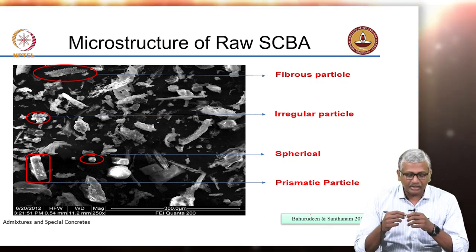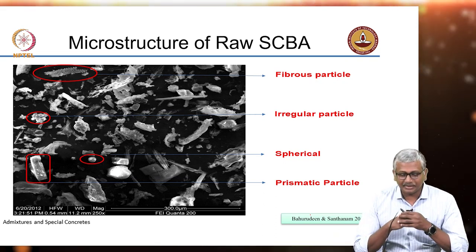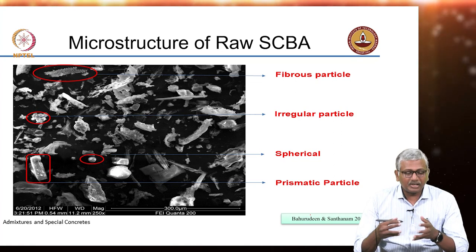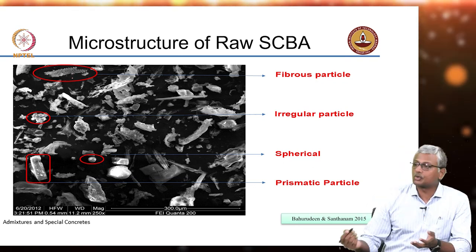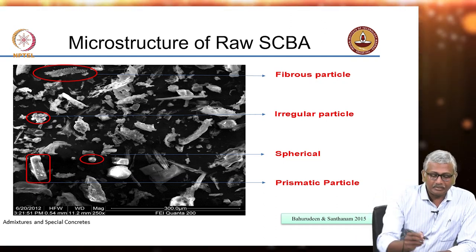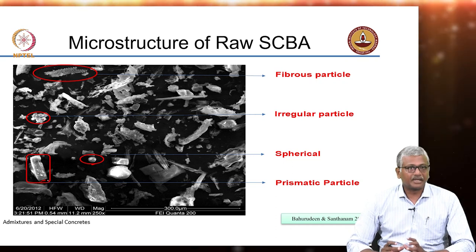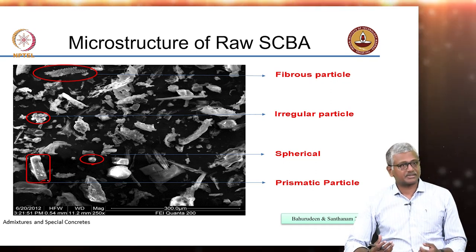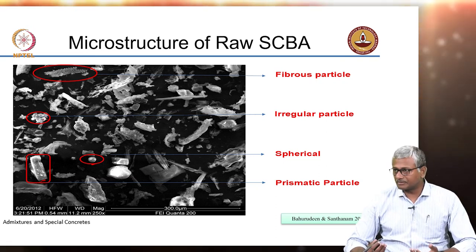Looking under the scanning electron microscope, the raw bagasse ash almost looks like random pieces of garbage thrown together. But on close inspection with X-ray analysis to identify phases, there are distinct fibrous particles that are remnants of original bagasse which have not been burnt, some irregular particles, and some nicely defined spherical and prismatic particles. Whenever something has a good shape it means it has had time to crystallize; whenever something is irregular it indicates an amorphous phase.